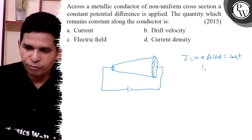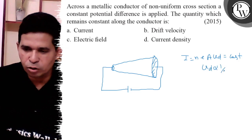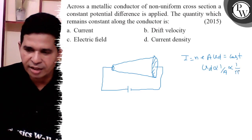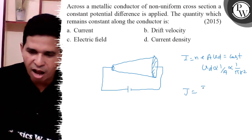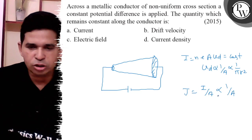VD is inversely proportional to 1 by area, which is 1 by πR², and current is constant. J = I/A, so it is also 1 by A, so J is not constant throughout.